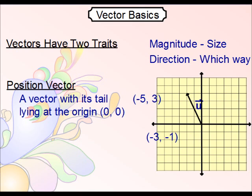Typically, vectors are drawn with its tail lying at the origin, the way you see it here. This is referred to as a position vector.